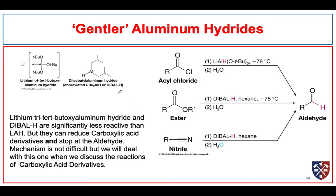We do have gentler aluminum hydrides that work a little differently. Diisobutylaluminum hydride (DIBAL) will reduce carboxylic acid derivatives and stop at the aldehyde. Interestingly, it will also reduce aldehydes and ketones to the alcohol. So how is it that we can use this reagent to reduce an acyl chloride or an ester to an aldehyde and stop there? Let's take a look at the mechanism.